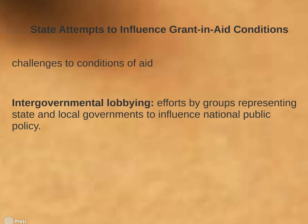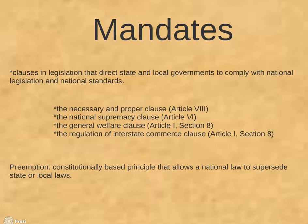They also lobby to prevent the passage of national laws mandating specific state and local actions. The constitutional clauses most often questioned are the necessary and proper clause, the national supremacy clause, the general welfare clause, and the regulation of interstate commerce clause. With those court decisions in hand, the national government is able to mandate certain state and local government actions. Mandates are clauses in legislation that direct state and local governments to comply with national legislation and national standards.